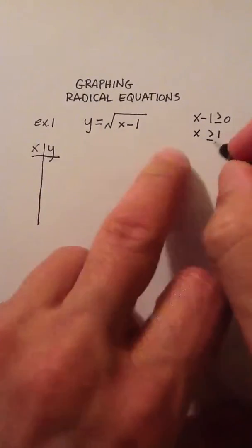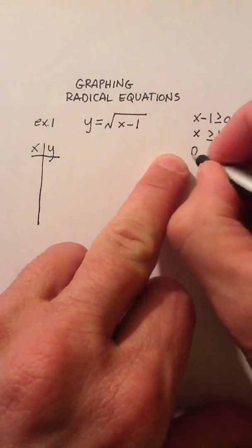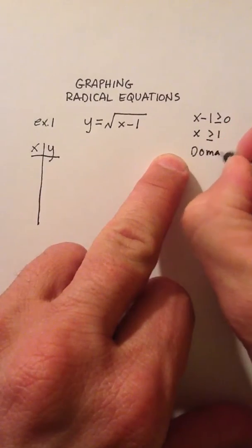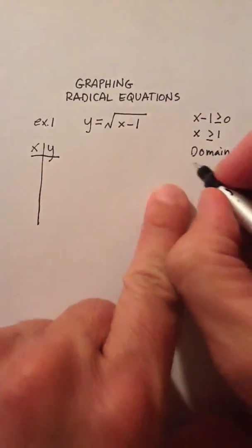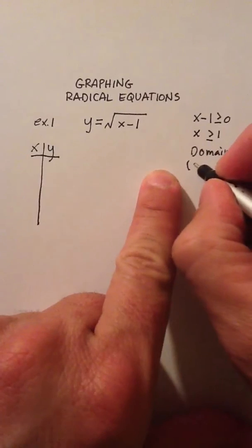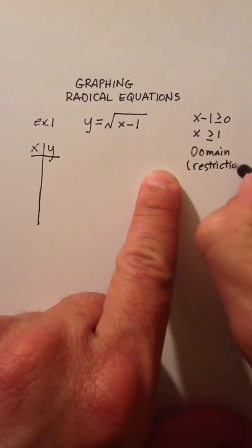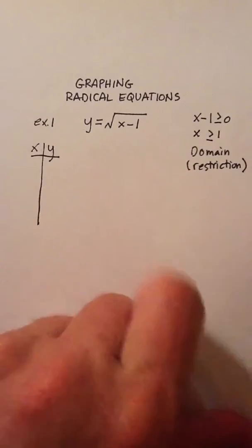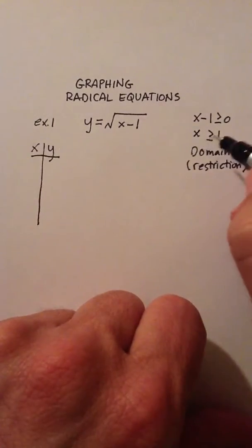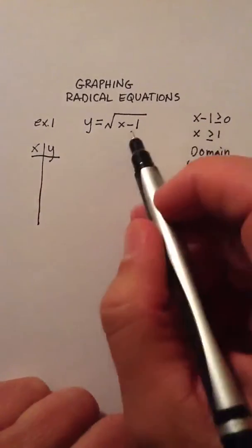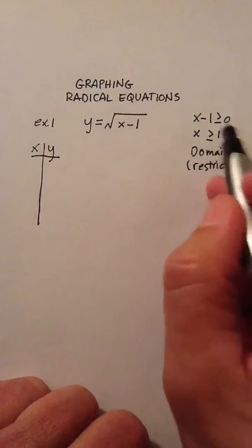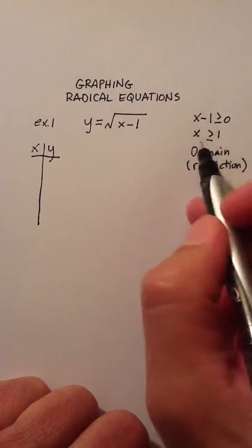And this is now my domain. Now, if you want to look at it in the opposite way, you can just see these are restrictions. These are what my x's have to be chosen from. These are restrictions. x has to be greater than or equal to 1. Again, remember, just take this, what's under here, set it greater than or equal to 0, and then solve for the answer.